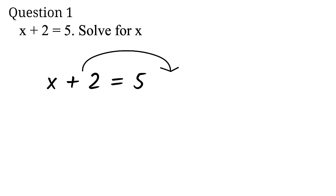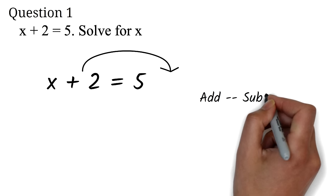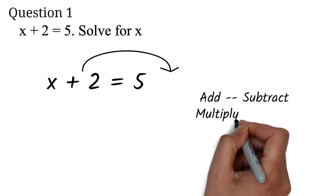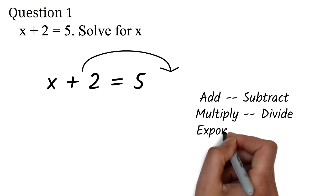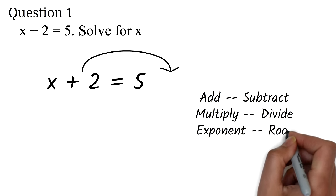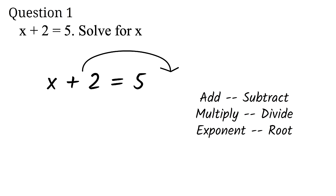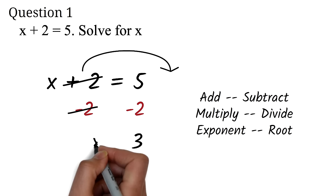So here, we want to move the plus 2 to the other side of the equation. We do that by performing the opposite operation on both sides. The opposite operation of addition is subtraction. The opposite operation of multiplication is division. The opposite operation of exponent is the root or radical. So we will subtract 2 from both sides. The 2 will cancel out. 5 minus 2 is 3, so x equals 3.